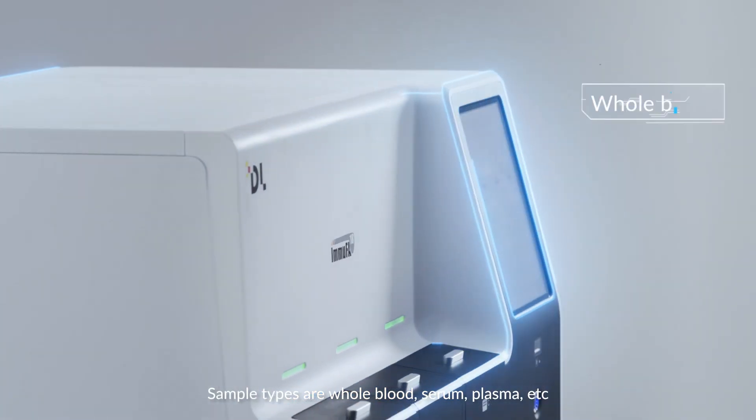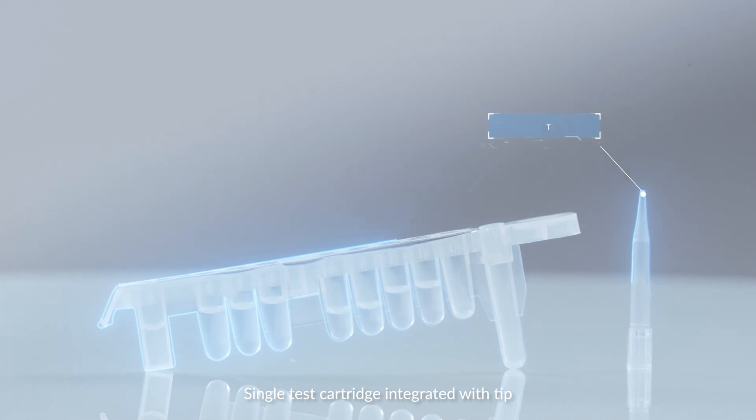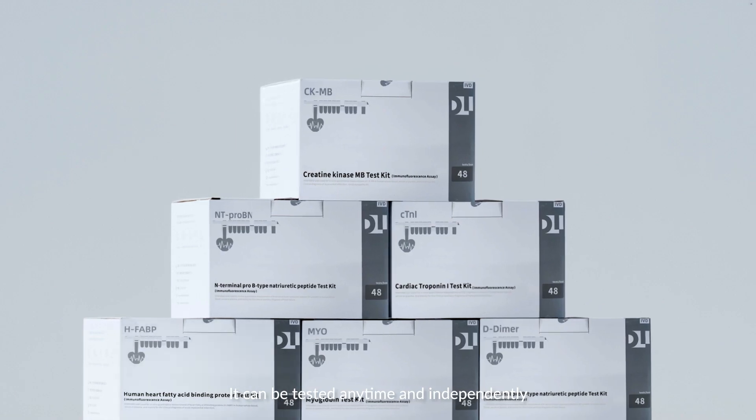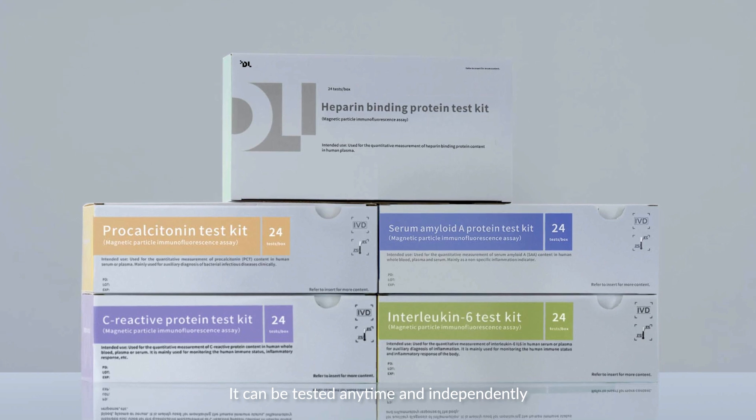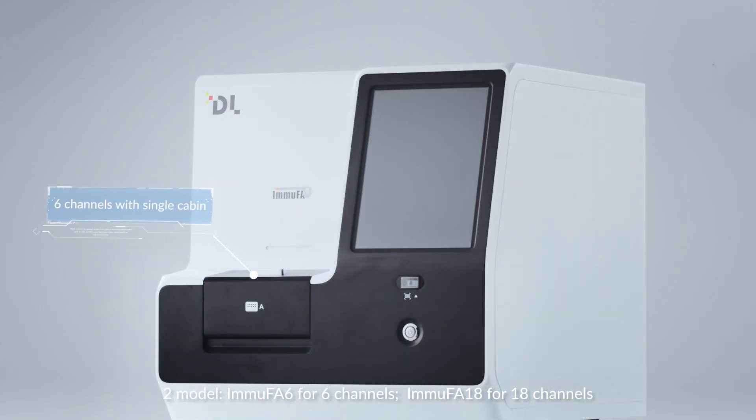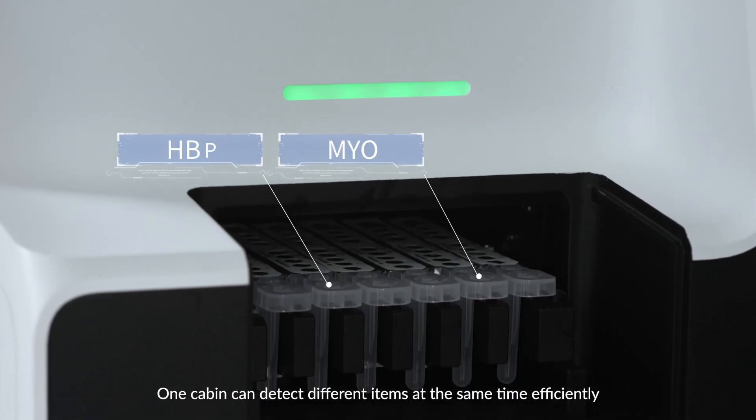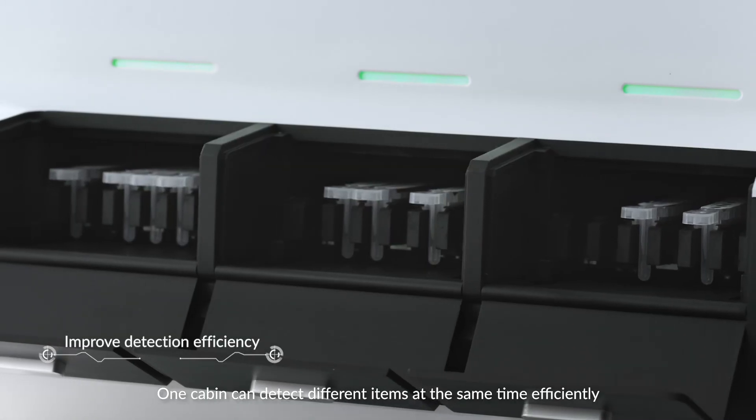Sample types include whole blood, serum, plasma, etc. Single test the cartridge with tip. It can be tested anytime and independently. There are two models: EMU-FA-6 for 6 channels, EMU-FA-18 for 18 channels. One cabin can detect different items at the same time efficiently.